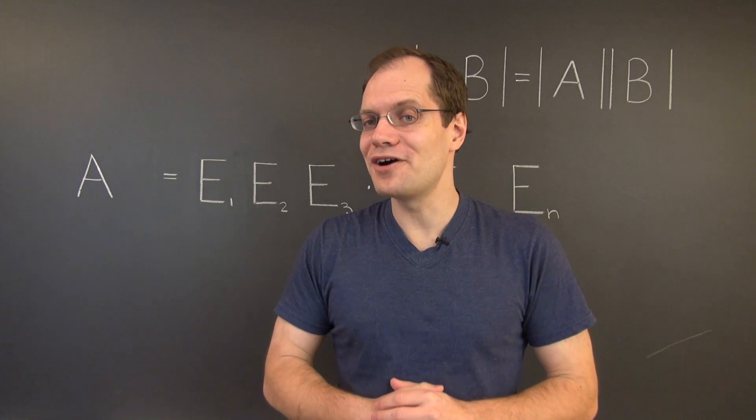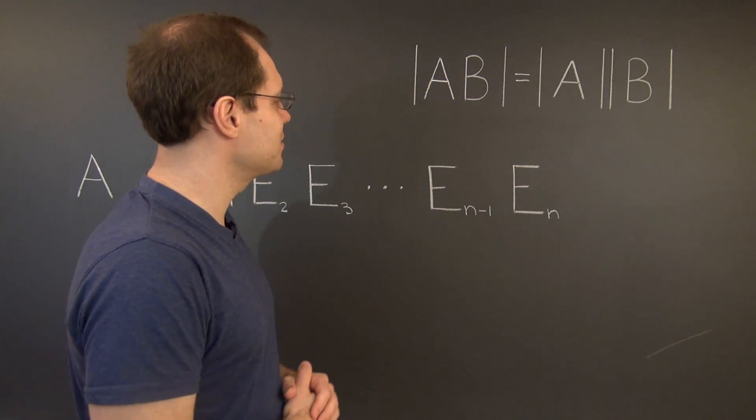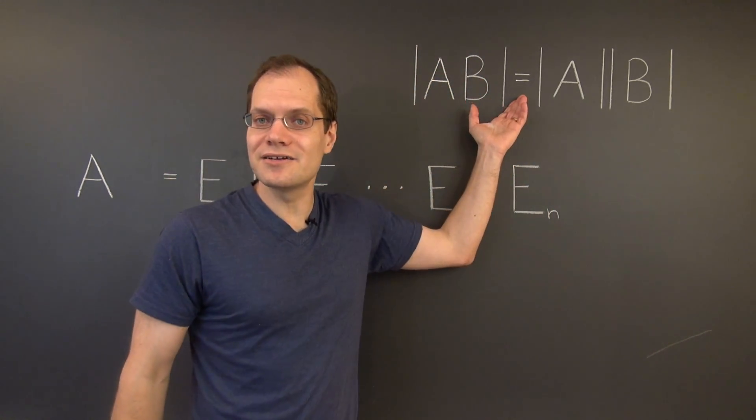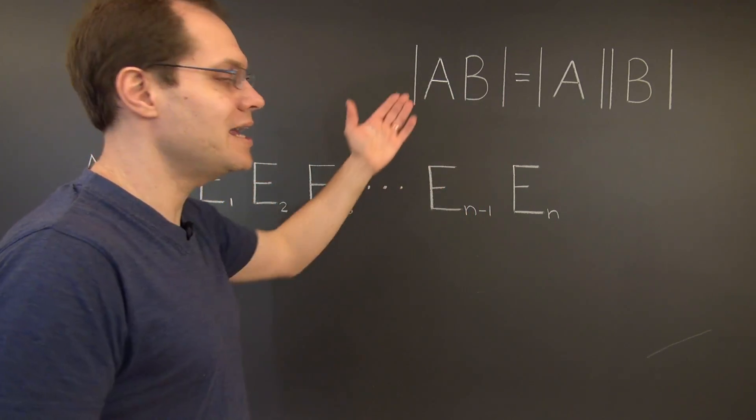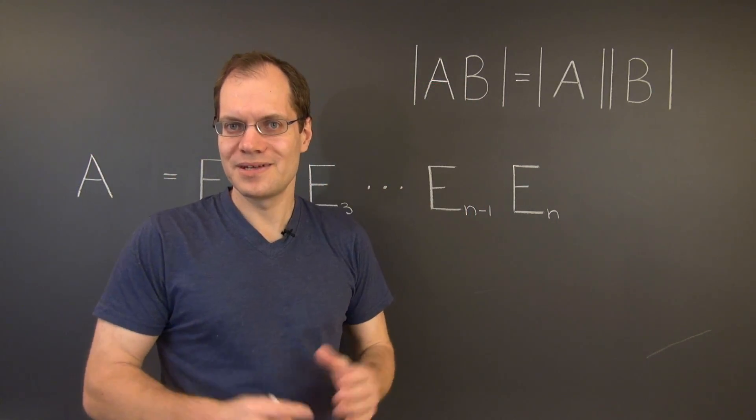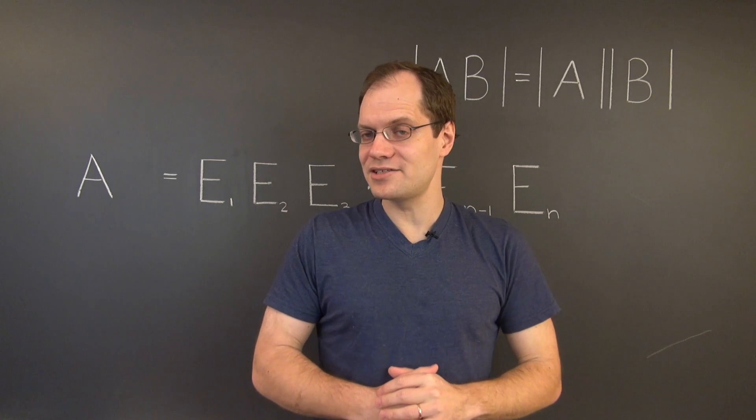But that's good enough for us, because when A is singular, this identity clearly holds. When A is singular, AB is also singular. Take a moment to remind yourself why that's true.